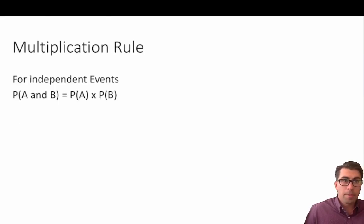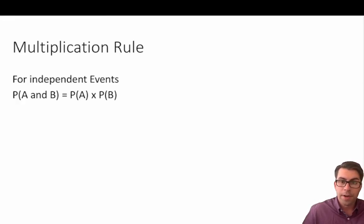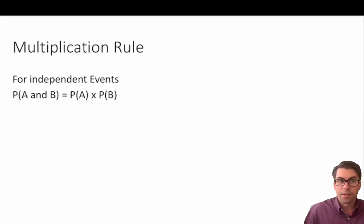Finally, the multiplication rule applies to independent events. Just as a refresher, independent events were the probability of you watching this video and the probability of me having just eaten a grilled cheese sandwich. The probability of you watching the video and me having eaten a grilled cheese sandwich equals the probability of you watching the video times the probability of me having eaten a grilled cheese sandwich — the probability these two events occur at the same time.